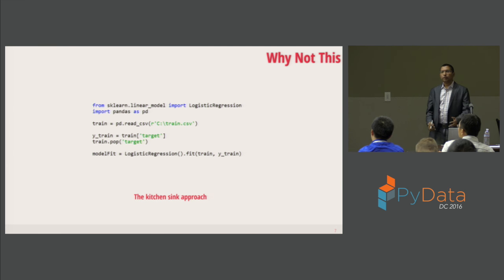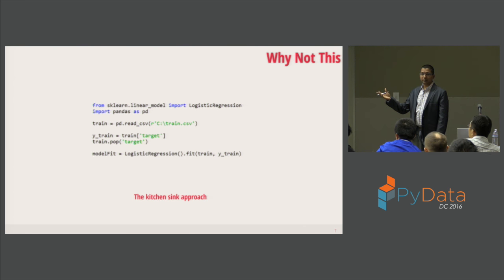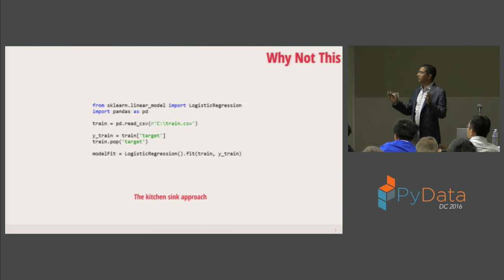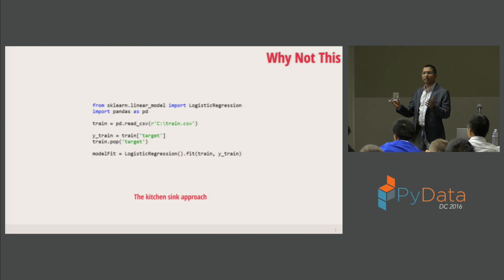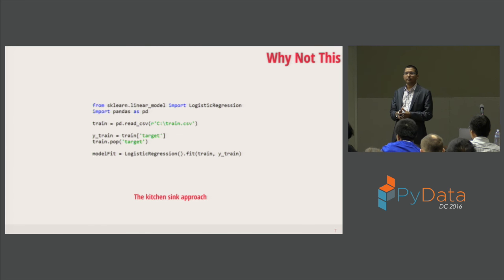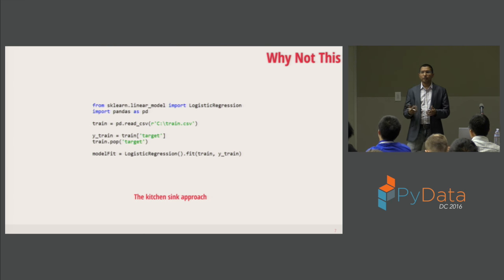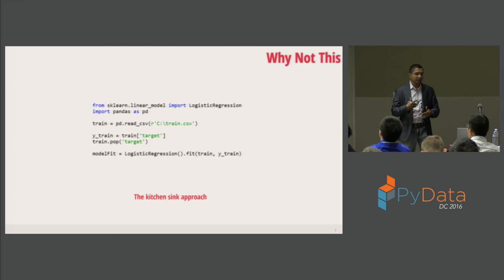Why not just throw everything into a model — the kitchen sink approach? Using scikit-learn, you can read data in pandas with one line and throw the whole data set into a logistic regression model. You could argue that's reasonable — you might get an area under the curve greater than 0.5, so you're still doing better than a coin toss. But there's a better way to do it.